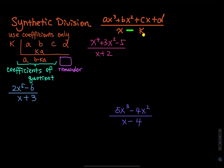So for synthetic division, we can only take a polynomial divided by a binomial. Synthetic division uses coefficients only — the work is much cleaner — but the disadvantage is that it only works for a binomial divisor.